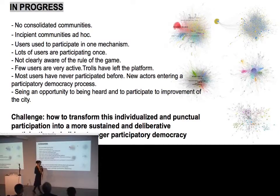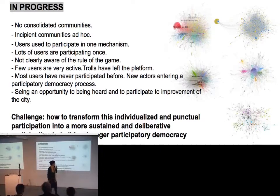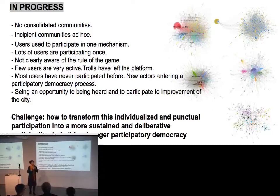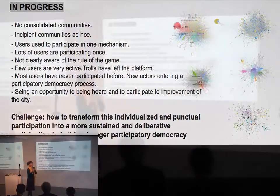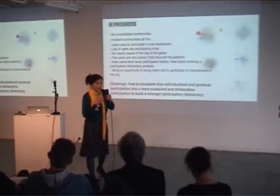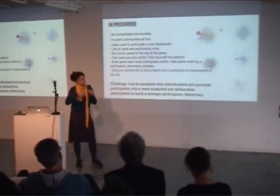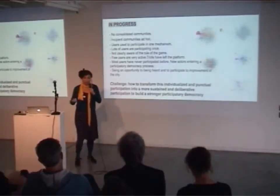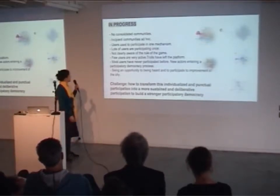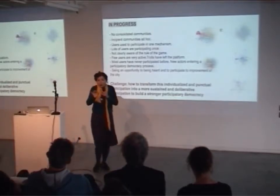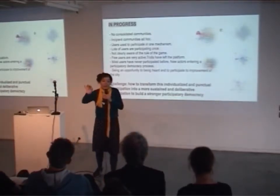What we could see in the participation data is that there's no consolidated community. We pulled lots of data to see if there was a community with potential to gather and impulse citizens to reach the threshold of 27,000 supports. But there were no consolidated communities — only incipient communities created ad hoc around a subject or polemic issues.